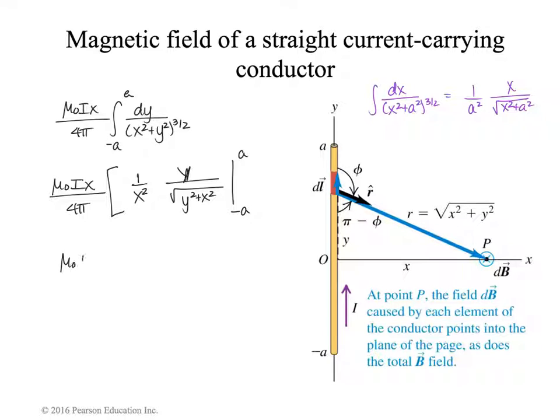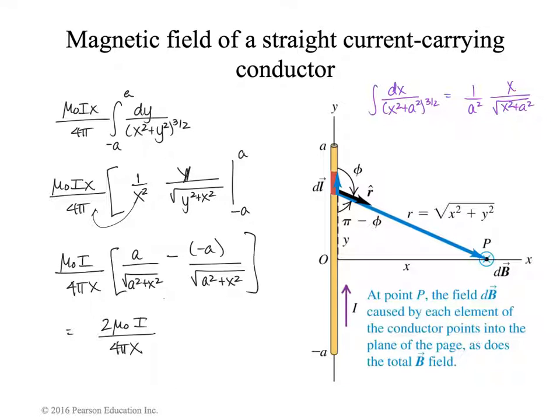And simplifying and evaluating at the limits. If I take the x² out here notice the x on the bottom disappears and I get 4πx and then I'm going to get a over the square root of a² plus x² minus minus a over the square root of a² plus x². And that's going to give me 2a on the top. So I'm going to get 2μ₀I over 4πx times a over the square root of a² plus x². And that's what I got for my integral.